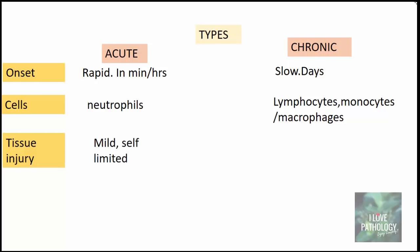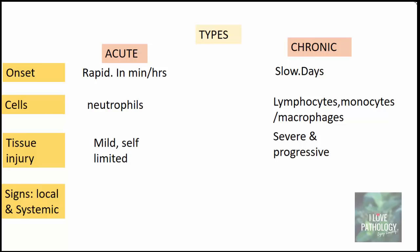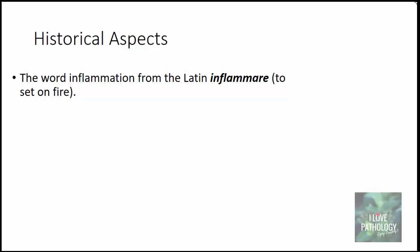Tissue injury in acute inflammation is mild and often self-limited, whereas in chronic inflammation it is severe and progressive. The local and systemic signs in acute inflammation are very prominent, whereas they are less prominent in chronic inflammation. These are the basic differences between acute and chronic inflammation.